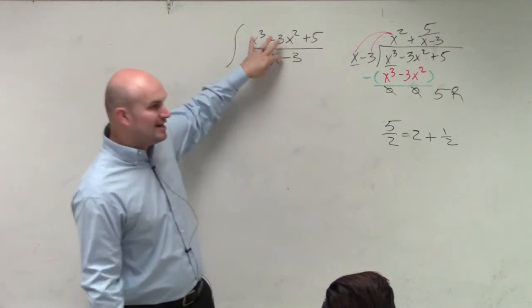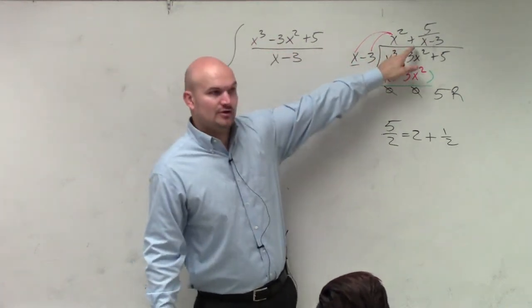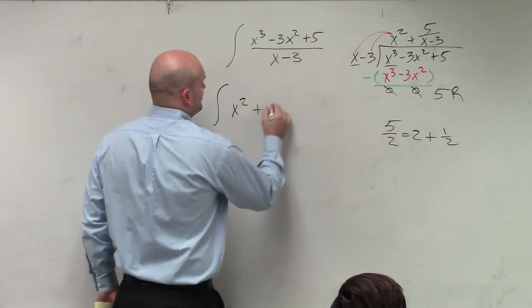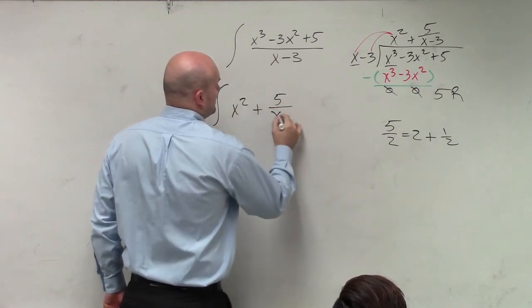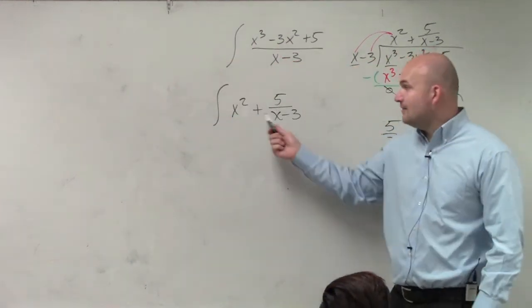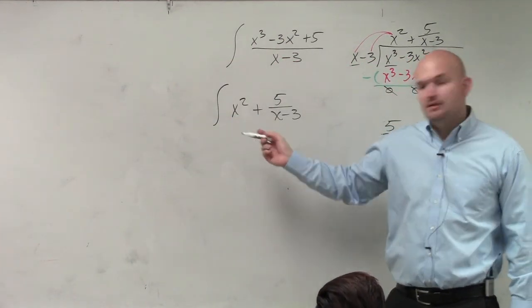So what I could do is instead of writing it this way, I could write the integral of this. Integrate x squared plus 5 over x minus 3. That's helpful because now, can I break up this integral? Of course I can.